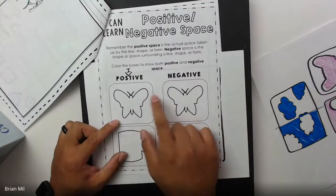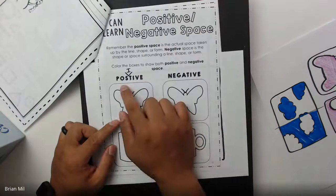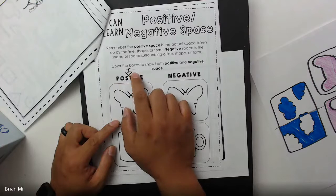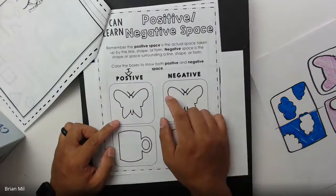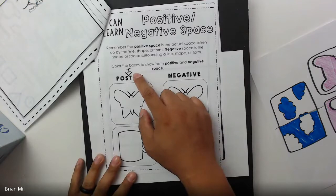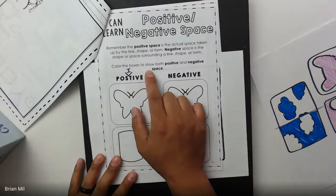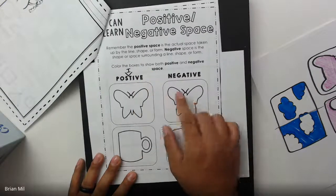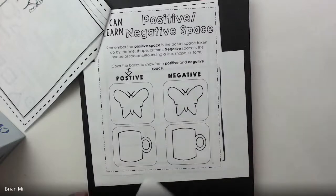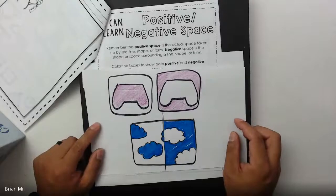Basically, anything on the outside of a shape, space, or form is negative space. We have a couple of examples — two butterflies and two mugs. There was a spelling error in the workbook which I corrected. They want us to color the boxes below to show the differences between positive and negative space.